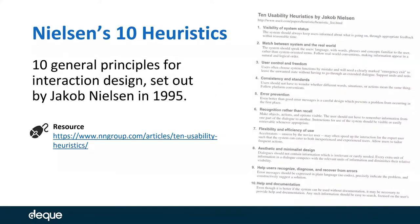When Nielsen came up with these heuristics, you had 10 of them. Examples on screen include things like visibility of system status — the system should always keep users informed about what is going on through appropriate feedback within reasonable time — or consistency and standards, where users should not have to wonder whether different words, situations, or actions mean the same thing, and you have to follow platform conventions. These are high-level, general rules of thumb to guide design decisions for improved usability.